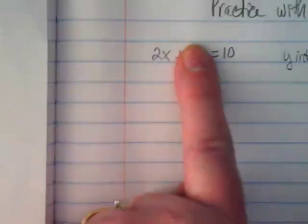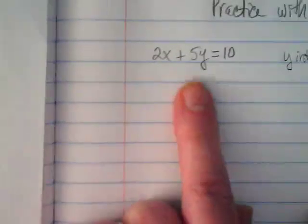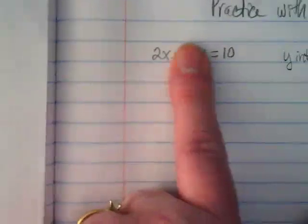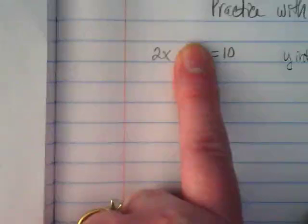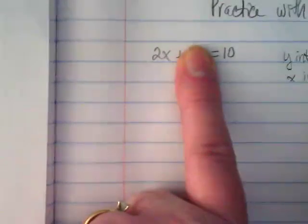I can do the same thing. If I'm going to insert a 0 for the y, 5 times 0 would go away. So I'm just going to cover it and 10 is equal to 2x, which means my x-intercept is what? My x-intercept is 5.